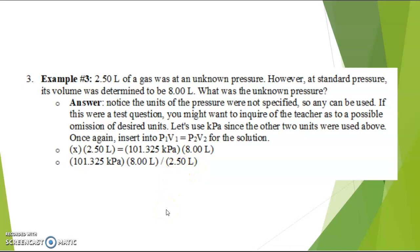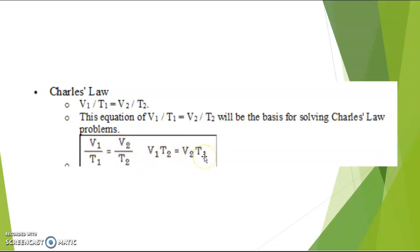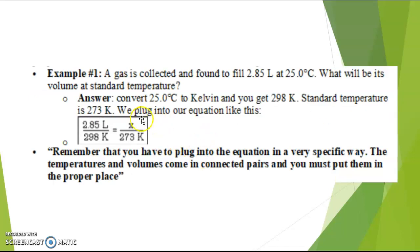Charles's Law establishes the relationship between volume and temperature: volume one divided by temperature one is equal to volume two divided by temperature two. This can also be written as volume one times temperature two equals volume two times temperature one. Here you have an example where you plug the data into the formula and, since you always have one unknown, you can solve it using proportions.